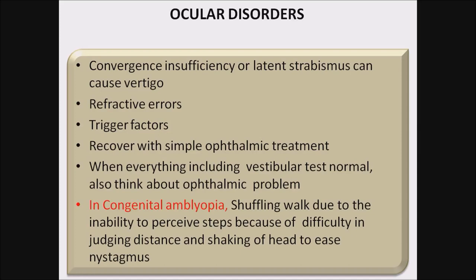Ocular disorders: in routine practice, we often forget ocular disorders. Convergence insufficiency or latent strabismus can cause vertigo. Refractive errors such as hyperopia, myopia, and astigmatism can also cause vertigo. Trigger factors are frequent use of television, mobile, or computers in children. These recover with simple ophthalmic treatments. When everything including vestibular tests is normal, remember ophthalmic problems. In congenital amblyopia, shuffling walk is seen due to difficulty judging distance and shaking of the head to ease nystagmus.